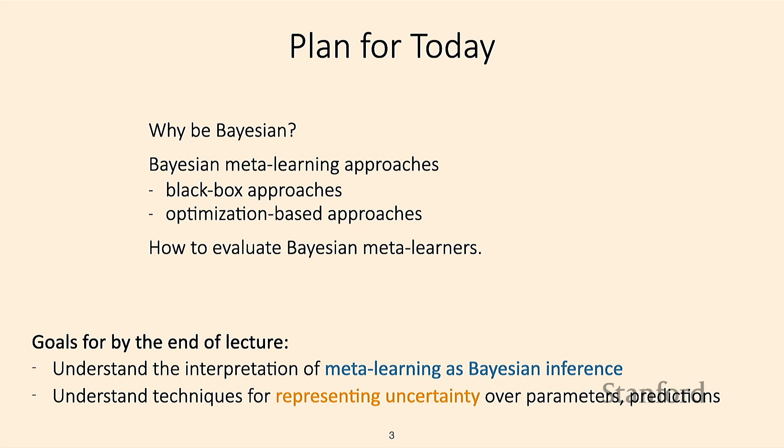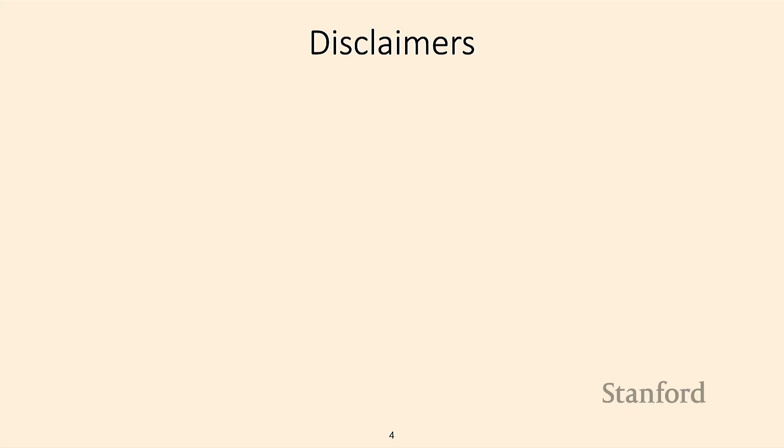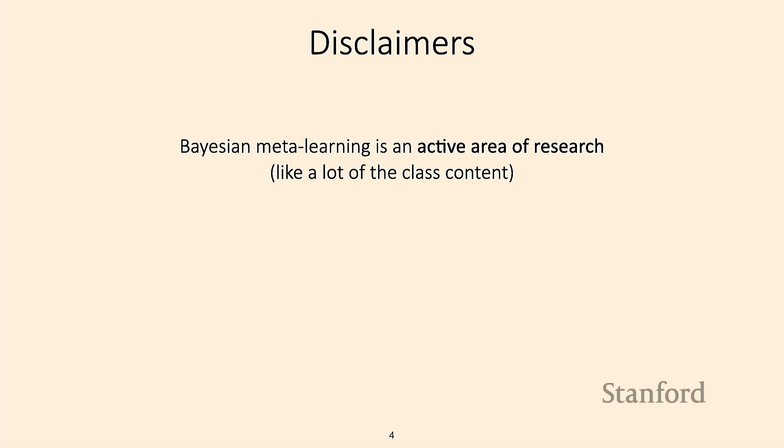The goals for the end of the lecture are to understand the interpretation of meta-learning as Bayesian inference, and also understand techniques for representing uncertainty over parameters versus over predictions. One quick disclaimer: like a lot of the class content, this is an active area of research, so there will be in some cases potentially more questions than answers in terms of the algorithms we're looking at.